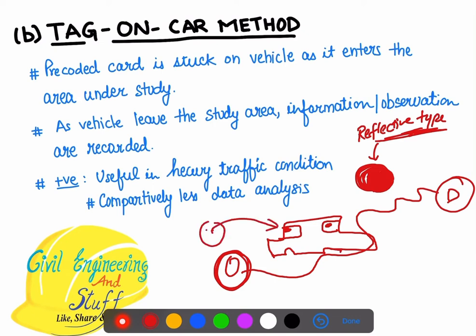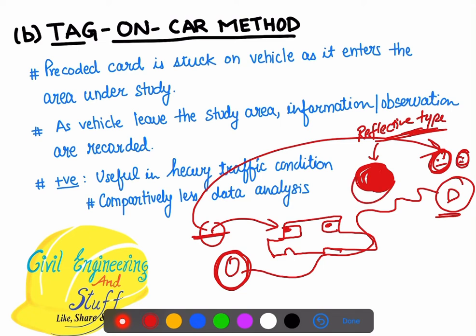A group of surveyors puts the tag on the vehicle at the origin, and a group of surveyors is present at the respective destination point. The surveyor informs via wireless communication that he has placed the tag on, say, a red car or a particular brand. The surveyor at the destination will then watch attentively for that specific vehicle appearing at the destination section, and from there they get to know that the vehicle has crossed.